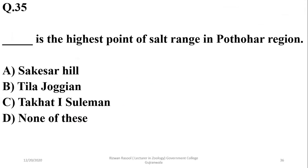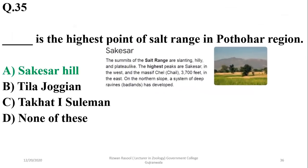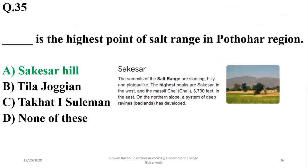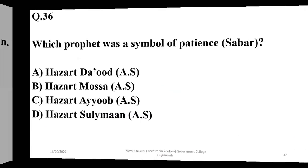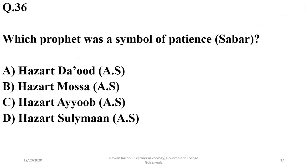Question 35: The highest point of the Salt Range in the Potohar region is Sakesar, so A is the right option. Question 36: The prophet who was a symbol of patience is Hazrat Ayub (AS) — known as Sabr-e-Ayyubi. So C is the right option.